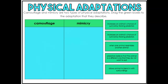Hello, third grade, and welcome back to Science. We're gonna continue looking at physical adaptations. Physical adaptations are ways that animals' bodies are that help them adapt to their environment. The two that we are gonna look at today, which are pretty interesting, are camouflage and mimicry.